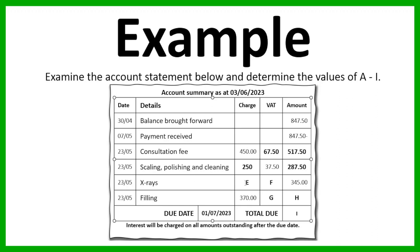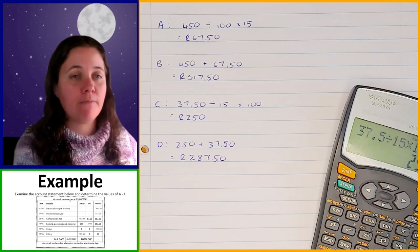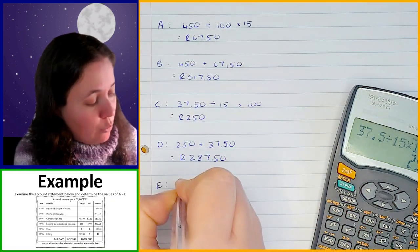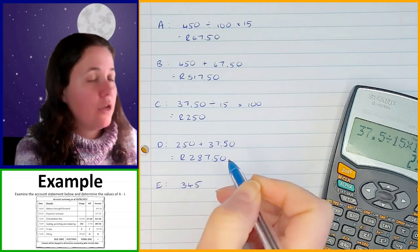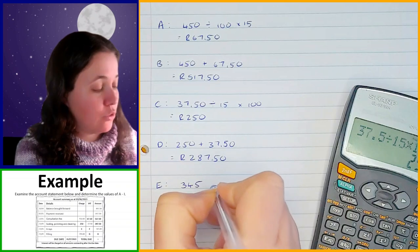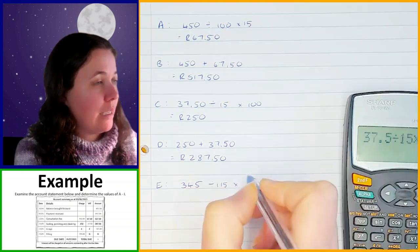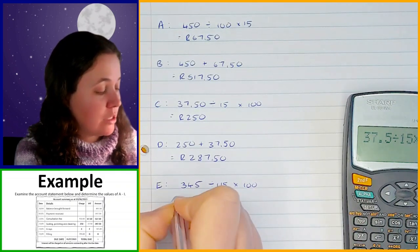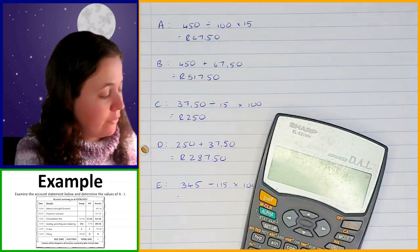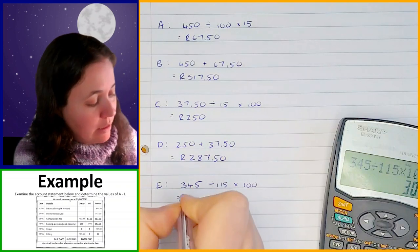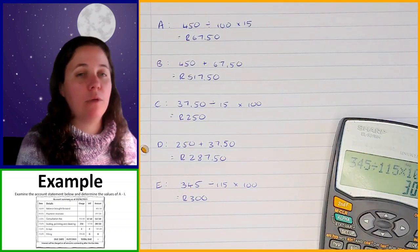Now let's go on to the x-rays. For the x-rays, we need to work out the charge and the VAT. The amount given is R345, which is the total amount inclusive of VAT — that is already 115%. So for E, we take R345 ÷ 115 × 100 to get the price exclusive of VAT. So 345 ÷ 115 × 100 gives us R300. That is how much the dentist is charging for the x-rays.